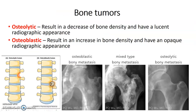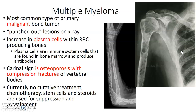Bone tumors are either osteolytic or osteoblastic. Osteolytic means a decrease in bone density with a lucent appearance. Osteoblastic means an increase in bone density with an opaque appearance. Multiple myeloma is the most common type of primary malignant bone tumor. It has a punched-out appearance and an increase in plasma cells. The cardinal sign is osteoporosis with a compression fracture. There is currently no definitive treatment — chemotherapy, stem cells, and steroids are used for suppression and containment.